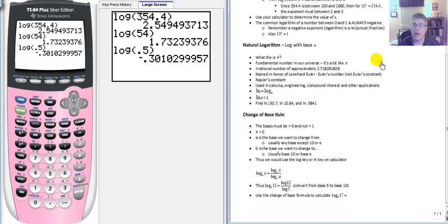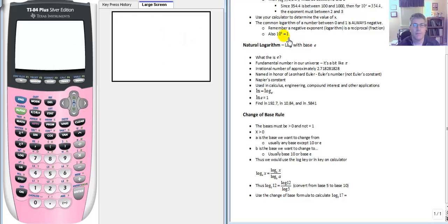Now the natural logarithm, that's a little bit different. And this is going to be new to you. The natural logarithm is logarithm with base e. Well, what is base e? What is e? Well, e is a number.